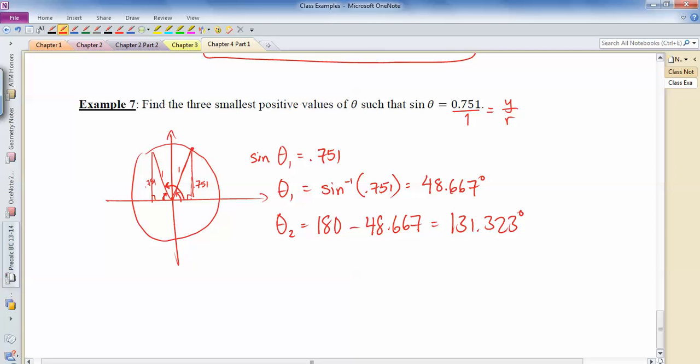So now I've gotten this angle to here. I've gotten this angle to there. The next time this happens is when my angle goes all the way around until I get back to here. So that's really theta 1, this one plus 360 degrees. So it's 48.667 plus 360, which ends up being, let's see, I forgot all my degree signs here, that ends up being 408.667 degrees.